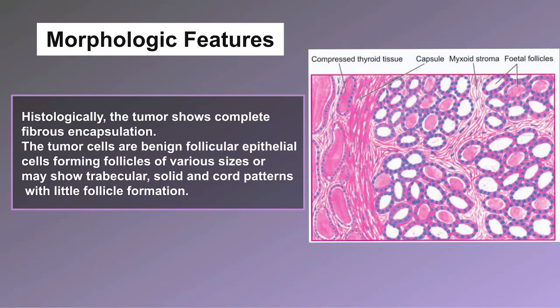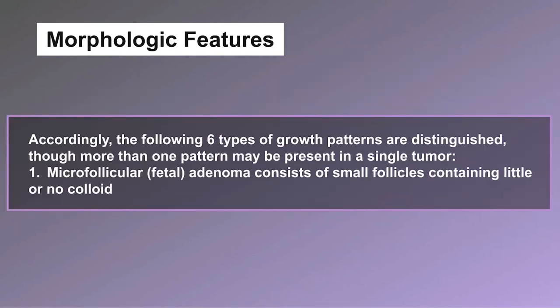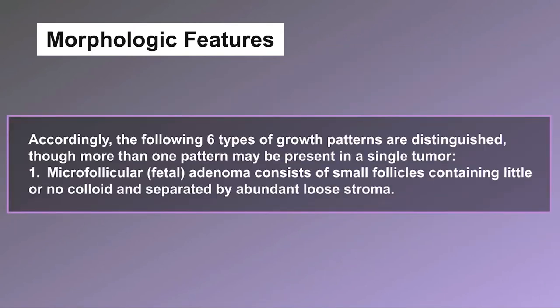Histologically, the tumor shows complete fibrous encapsulation. The tumor cells are benign follicular epithelial cells forming follicles of various sizes, or may show trabecular, solid, and cord patterns with little follicle formation. Accordingly, six types of growth patterns are distinguished, though more than one pattern may be present in a single tumor. Type 1: microfollicular (fetal) adenoma consists of small follicles containing little or no colloid, separated by abundant loose stroma.